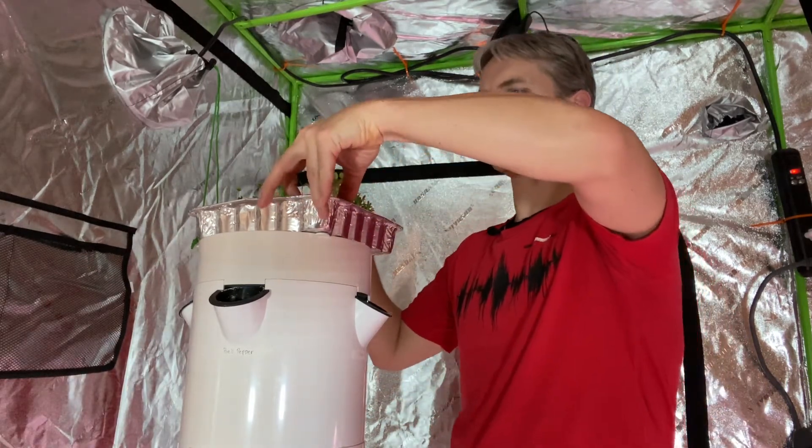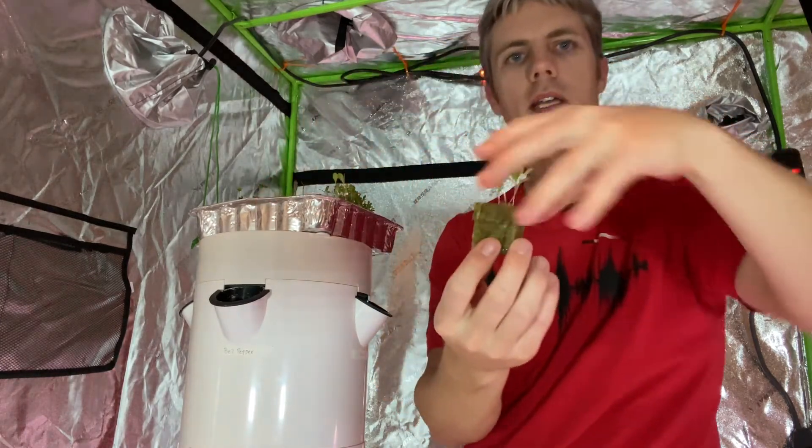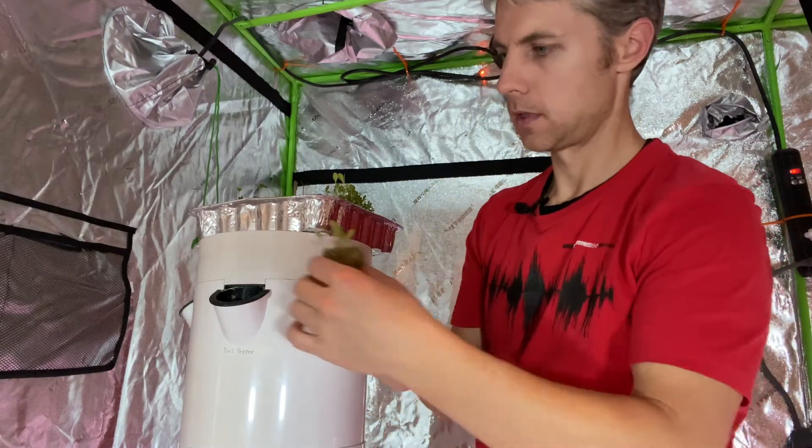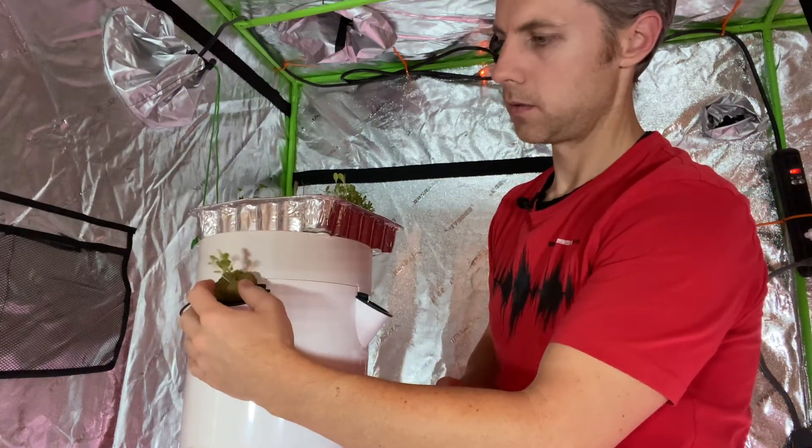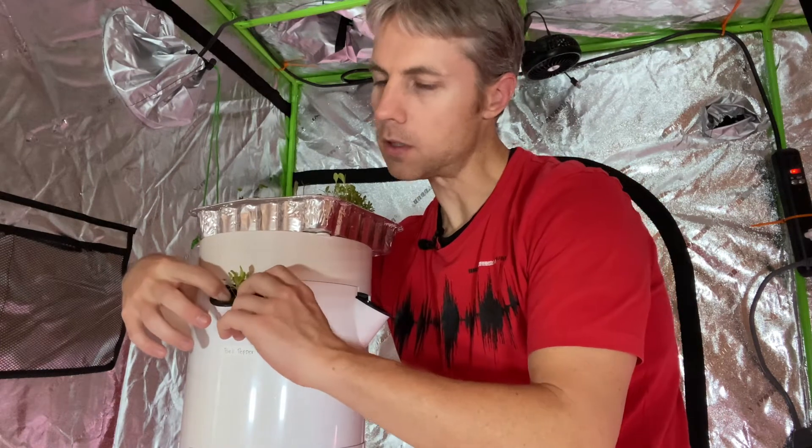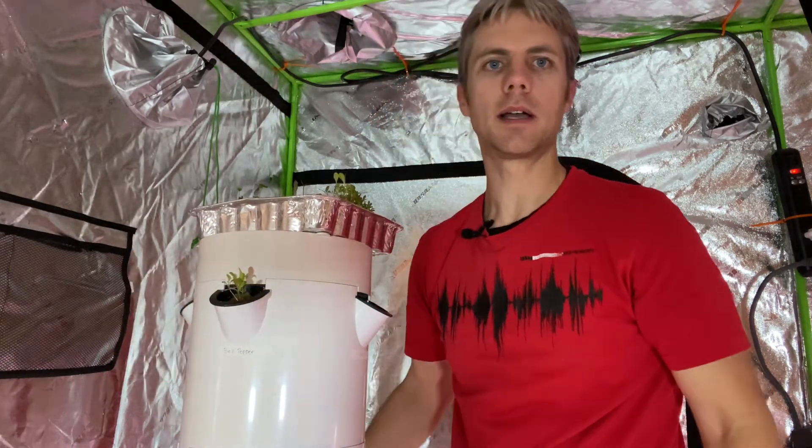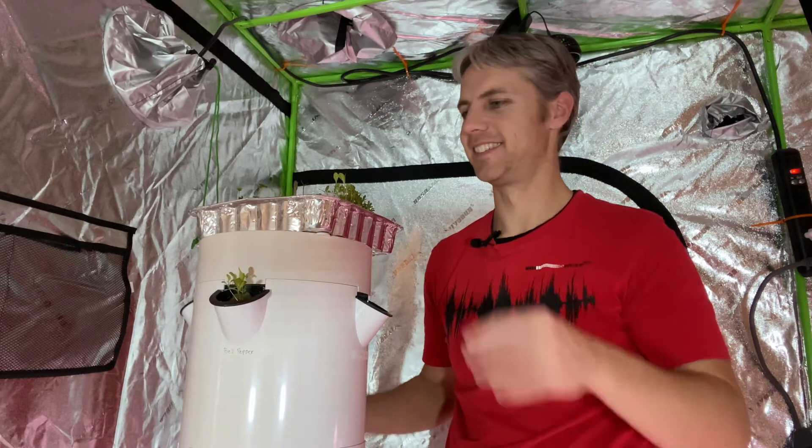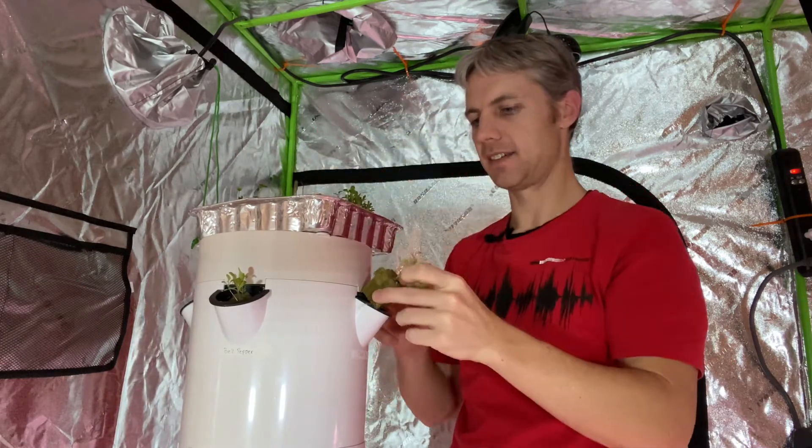So these are just seeds that I've started in rock wool. These are different lettuces. So what you're going to want to do is take your lettuce, rock wool and stick it down in your net cup and you're done. Let's continue with the rest.